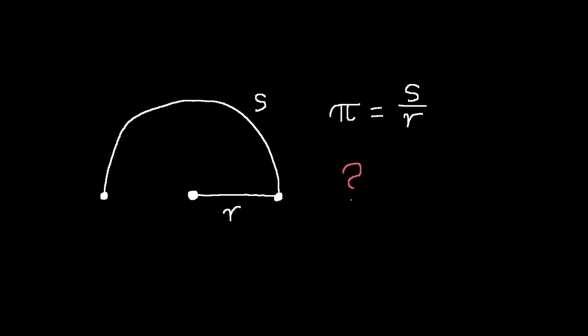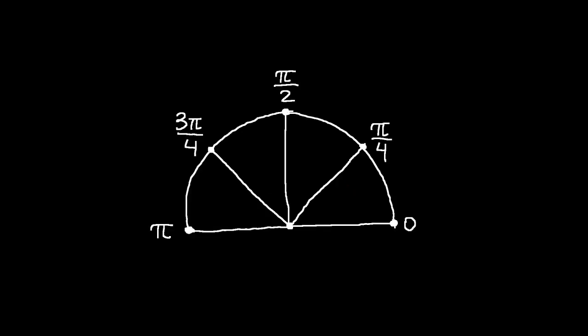Pi can just as well be interpreted as the ratio of the semi-circumference to the radius. But why would you even want to use the semi-circumference? It allows you to leverage symmetry. Since pi naturally describes the top half of the circle, an angle between 0 and pi is nicely described as its fraction of the semi-circumference times pi. Try doing this with tau, though, and you'll end up with awkward factors of 1 half everywhere.